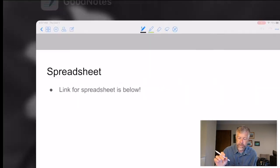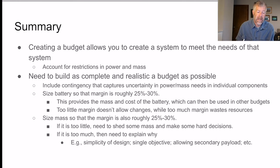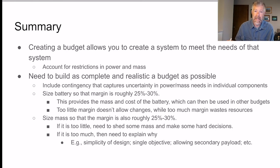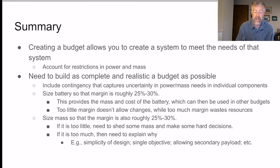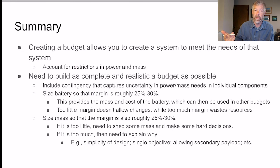In summary, creating a budget allows you to design a system that meets its needs. You account for restrictions in both power and mass. You need to build as complete and realistic a budget as possible, including contingency that captures uncertainty in power and mass requirements for individual components. You size the battery so the margin is roughly 25 to 30 percent, which also determines the mass and cost of the battery — values that feed into a mass budget and a financial budget.